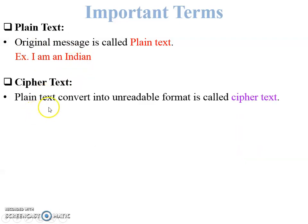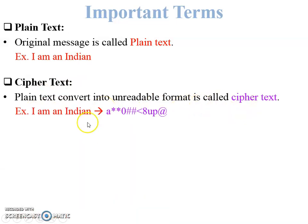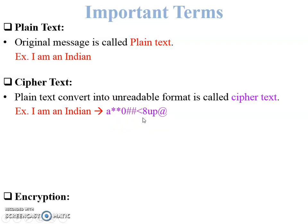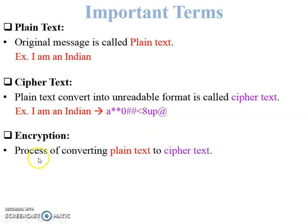Next is ciphertext. Plain text converted into an unreadable format is called ciphertext. For example, 'I am an Indian' converted into an unreadable format — we cannot read this data — is called ciphertext. The ciphertext is sent through the secure communication channel from sender to receiver.